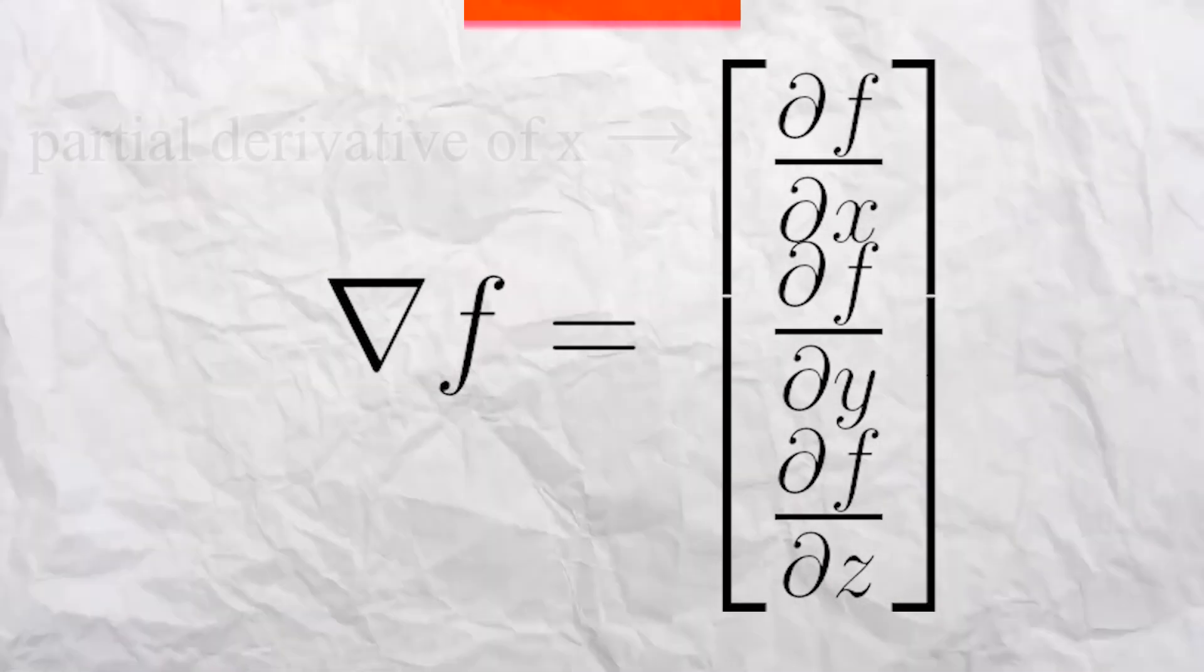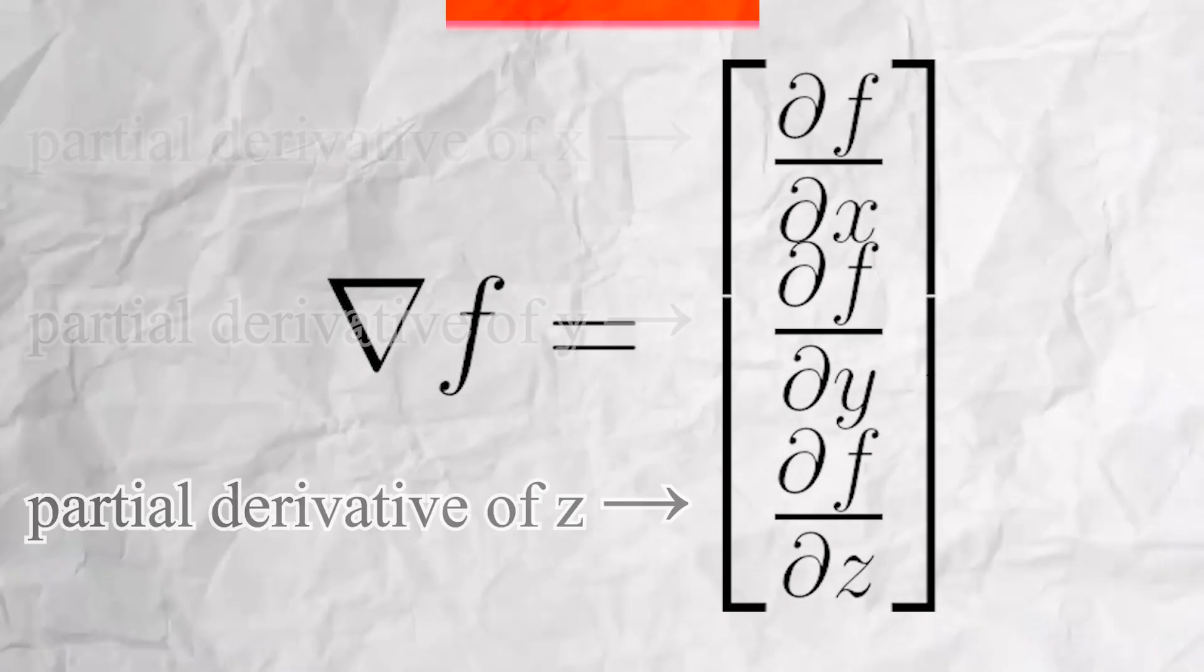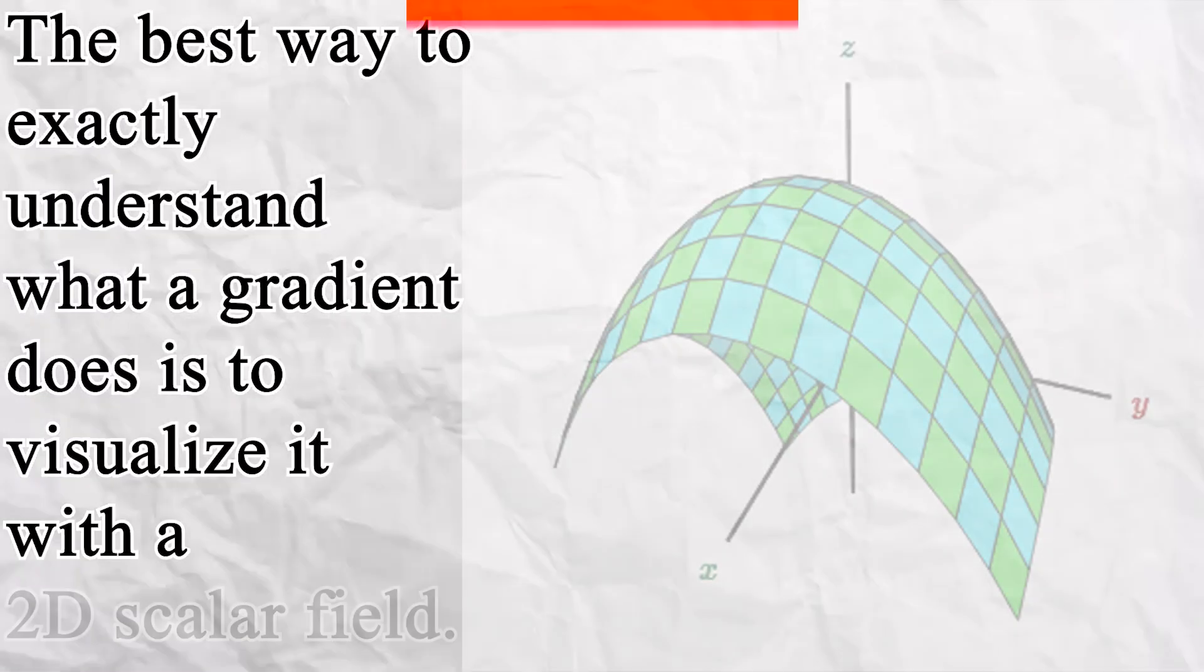And inside this gradient vector, we have the partial derivative of x, y, and z. The best way to exactly understand what a gradient does is to visualize it with a 2D scalar field.